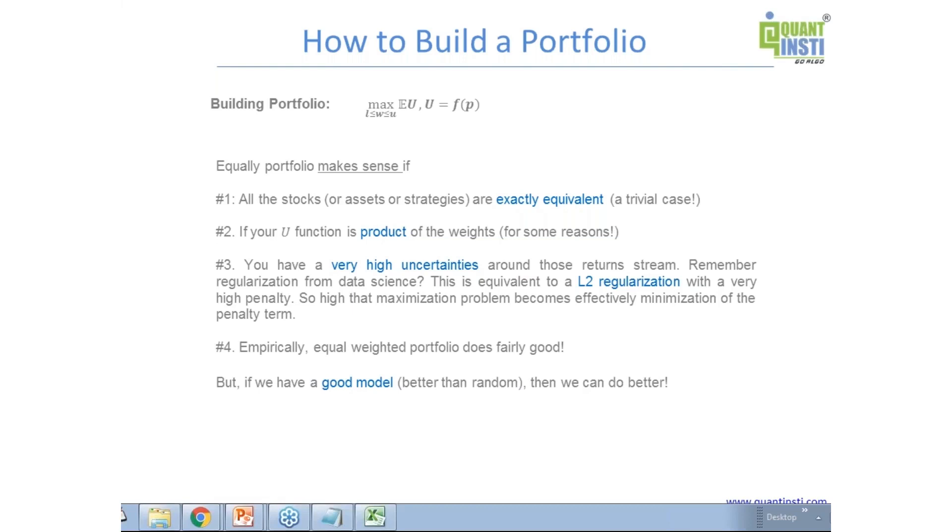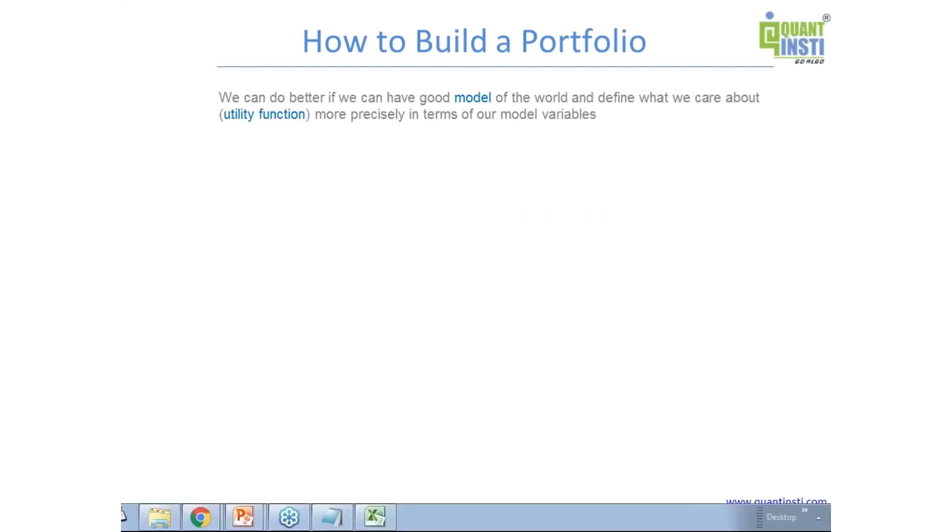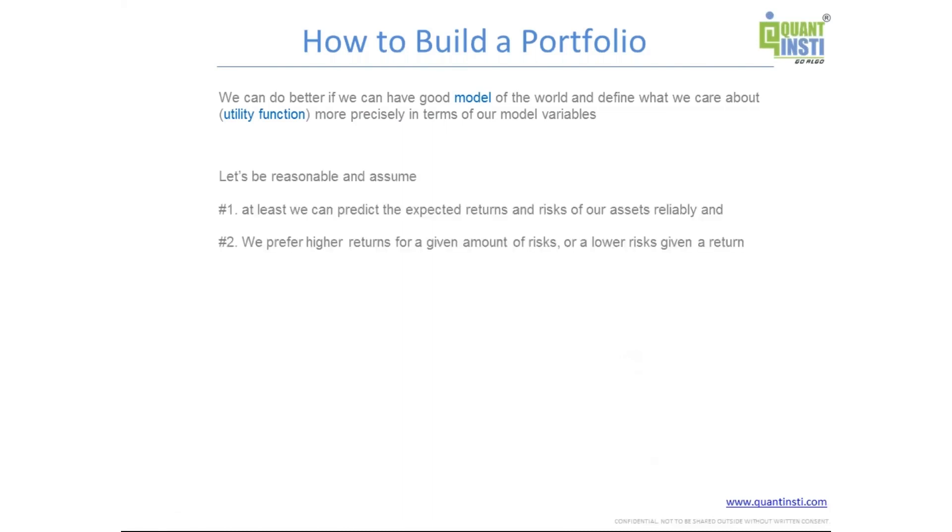So are there any particular approaches to better an equally weighted scheme? Let's see. If you have a better model of your world, better model of the market to be more precise, you can do better than average portfolio. Let's be reasonable and assume that we can predict the expected returns of our strategies and we can measure the risks of our strategies or the assets. It sounds like a very simple assumption but it's not that straightforward. We'll see later that measuring the risk is a bit easier, but expected return, estimating that is a bit tricky.